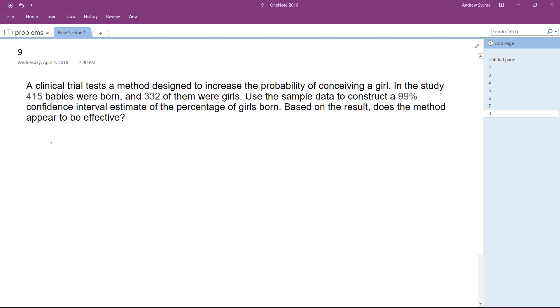First, we need to find our error. Actually, starting off, P is going to equal 332 over 415, which turns out to equal 0.8.